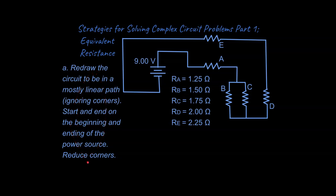So let's talk about the first strategy here. It says redraw the circuit to be in a mostly linear path, ignoring corners. Start and end on the beginning and ending of the power source. Reduce corners.